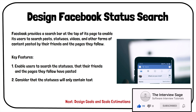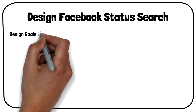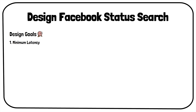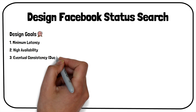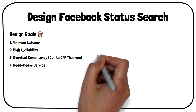Let us review the design goals and scale estimations of this system. As we did while designing Facebook News Feed, we should ensure that the final system has minimum latency, and users should not experience any significant lag while searching for statuses. The system should be highly available, and thus, due to the CAP theorem, we will aim for an eventually consistent system. Our system will be read-heavy in nature as more users will be searching on Facebook rather than posting statuses, so the number of read requests will be far greater than write requests.